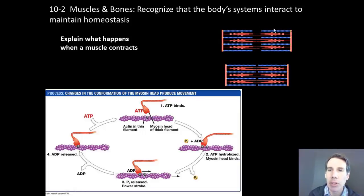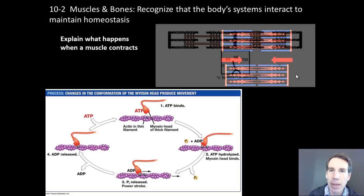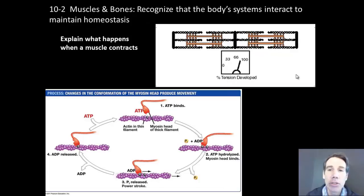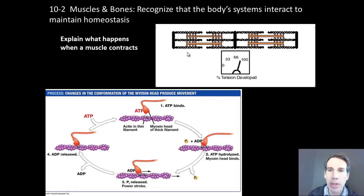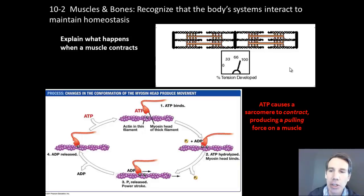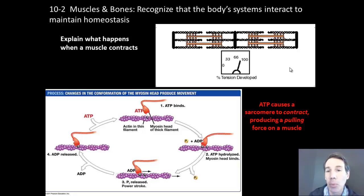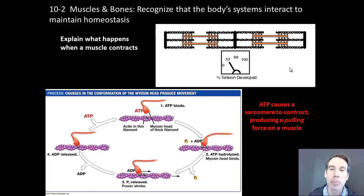Let's look at another view. In a relaxed sarcomere, the darker parts are myosin shown in red, and the blue filaments are actin. If ATP is used, the myosin heads pull the actin together, and the sarcomere contracts. Here's an animation showing this: as ATP or energy is used, the sarcomeres contract. The takeaway message is that ATP causes a sarcomere to contract, producing a pulling force on a muscle. Muscles can only work by pulling together since the sarcomere itself works by contraction.